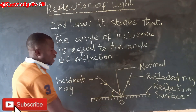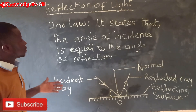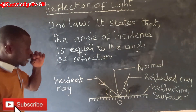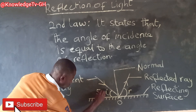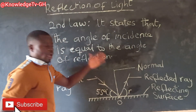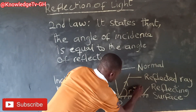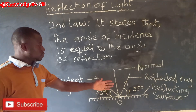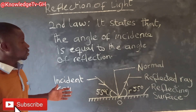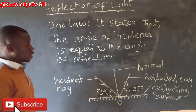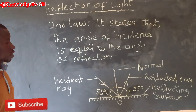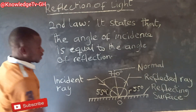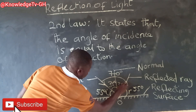The angle of incidence is equal to the angle of reflection. So if this angle is 55 degrees, then the angle of reflection r is also 55 degrees. The angles of a straight line add up to 180 degrees. So when you add 55 plus 55, you get 110 degrees, which means you are left with 70 degrees. These two remaining angles share the 70 degrees, so each of them is 35 degrees.